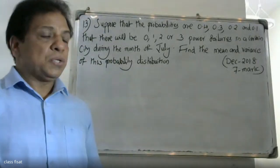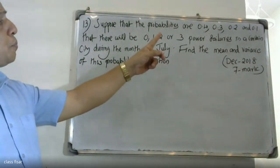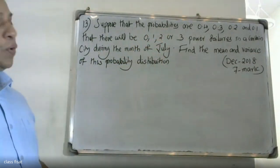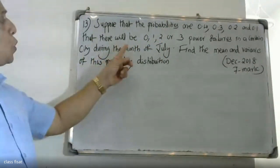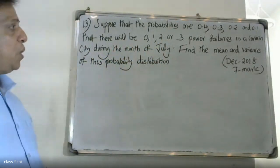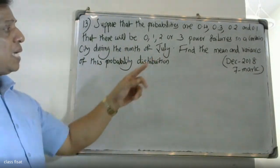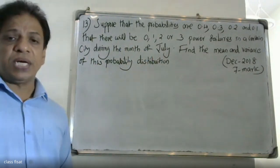Good morning students. This is an Acharya University question. Suppose that the probabilities are 0.4, 0.3, 0.2 and 0.1 that there will be 0, 1, 2 or 3 power failures in a certain city during the month of July. Find the mean and variance of this probability distribution. This is December 2018, 8 marks question.